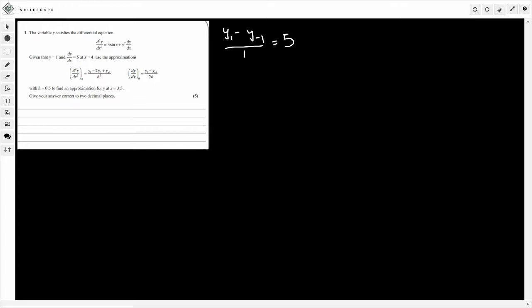That's the first step. So if it's divided by 1, all that means is that y1 minus y minus 1 is equal to 5. That's the first step of working. That gets us on the right track.